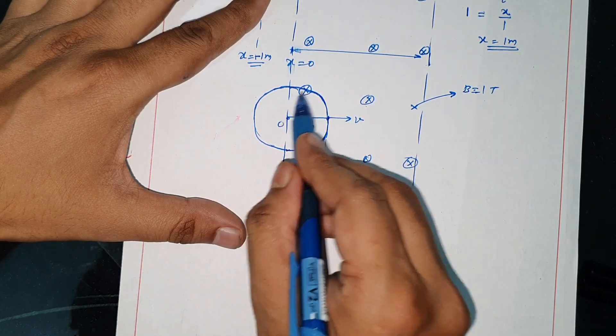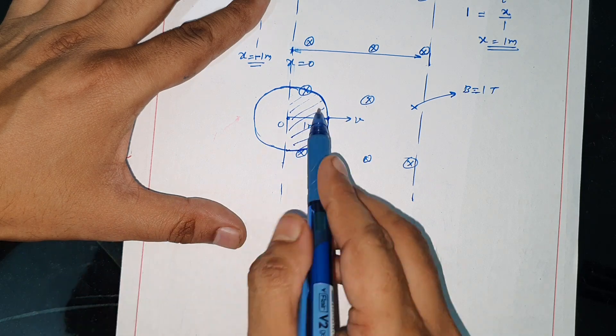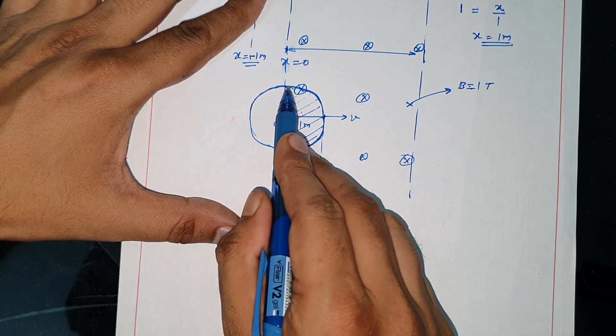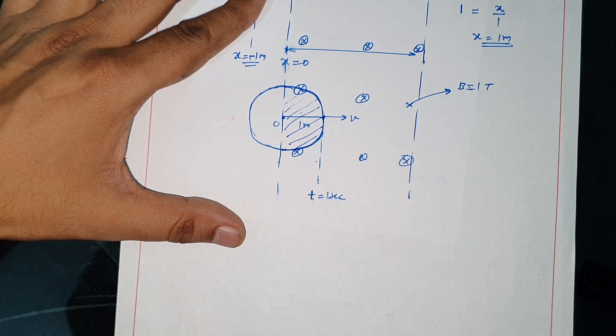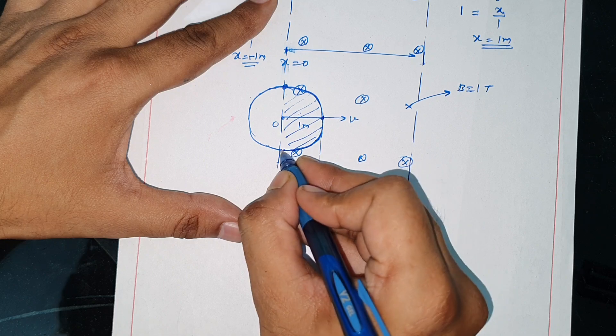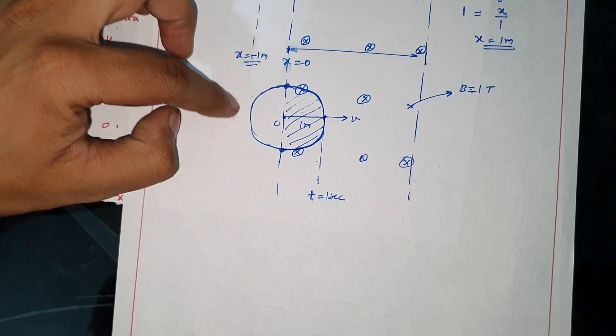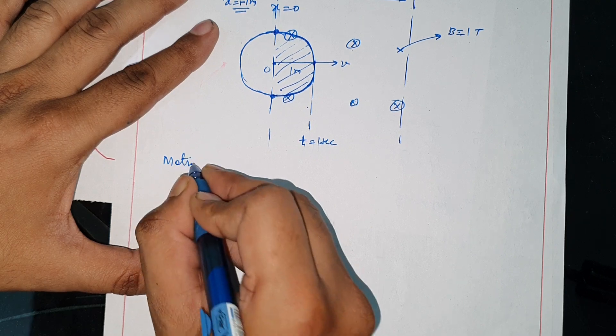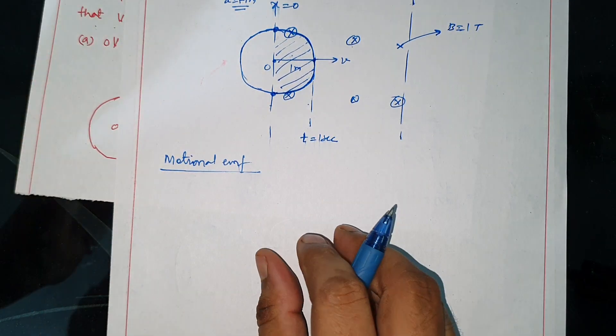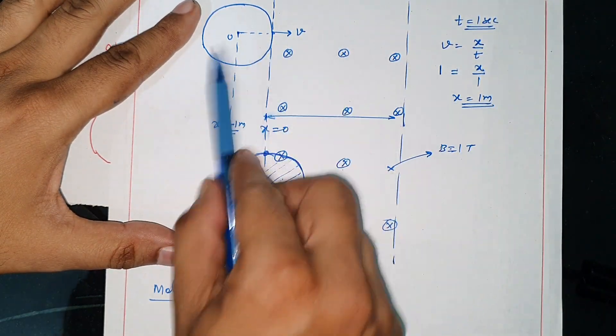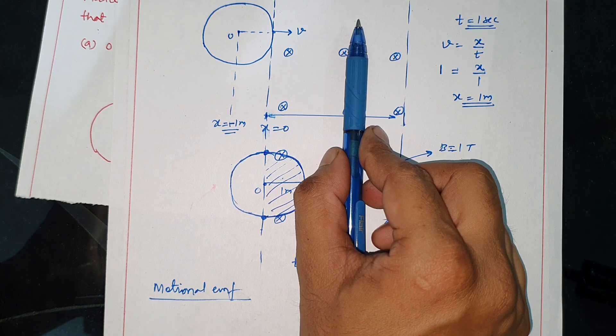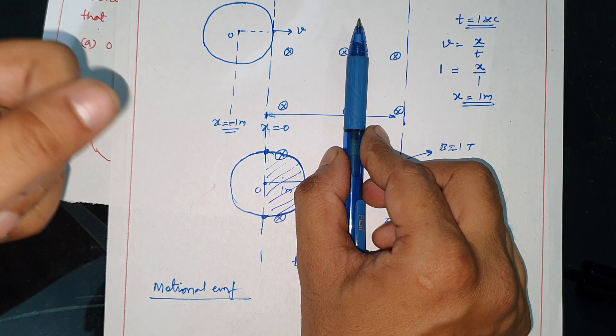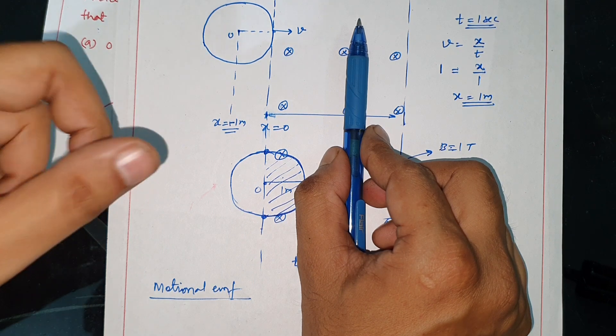Flux is changing, so there is a lot of area in the loop. So we will consider only that area. So this portion will be induced. Because this portion has cut, we will check the initial end and the final end of this section.